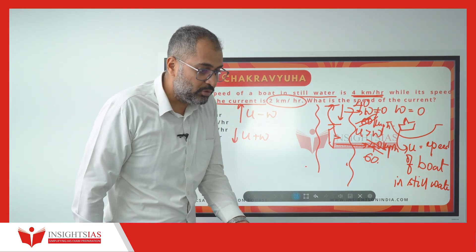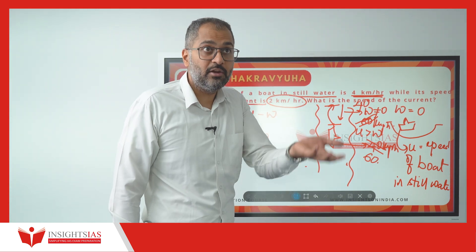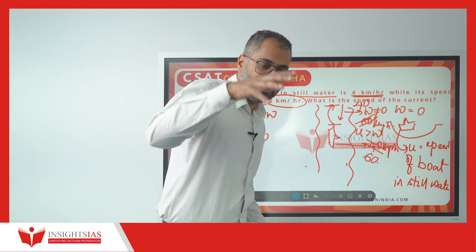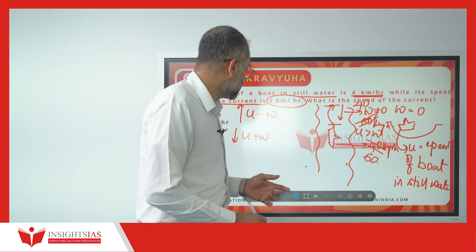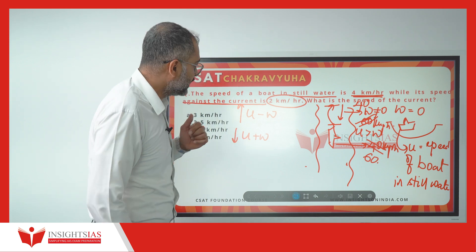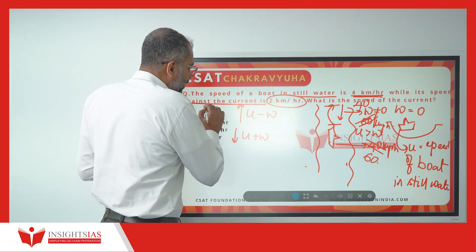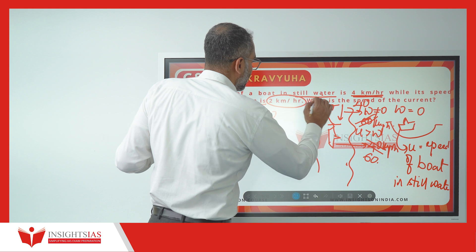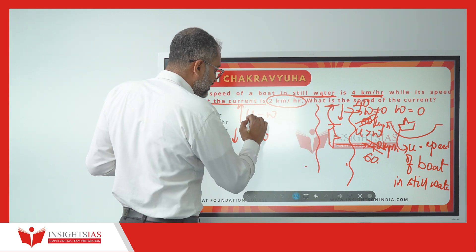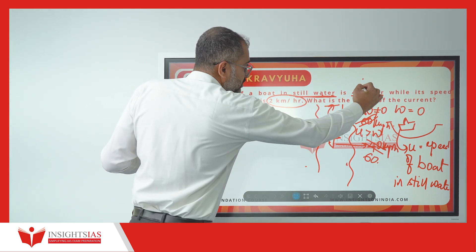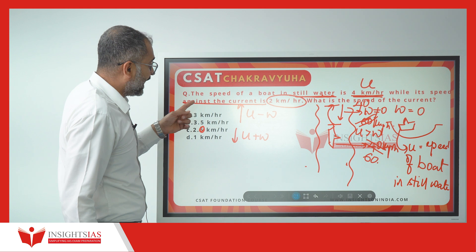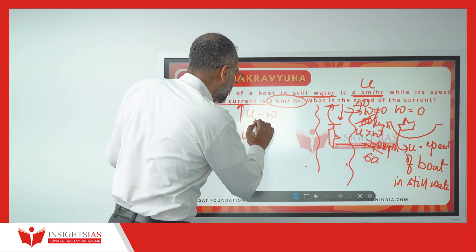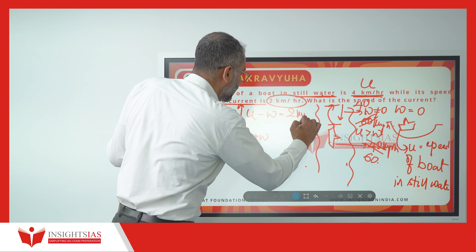It is like gravity — if you are jumping upwards, you face resistance from gravity; if you are coming down, it attracts you. Hence, downstream speed is U plus W, and upstream speed is U minus W. According to the question, the speed of the boat in still water is U, and its speed against the current — which is U minus W — is given as 2 km per hour.